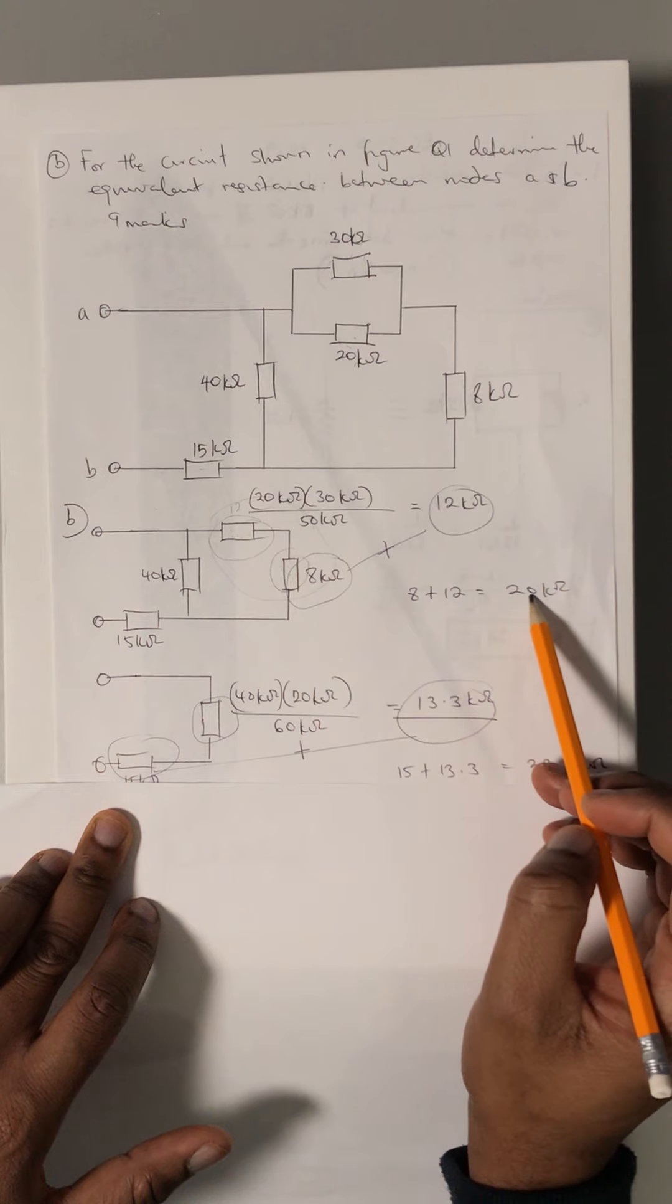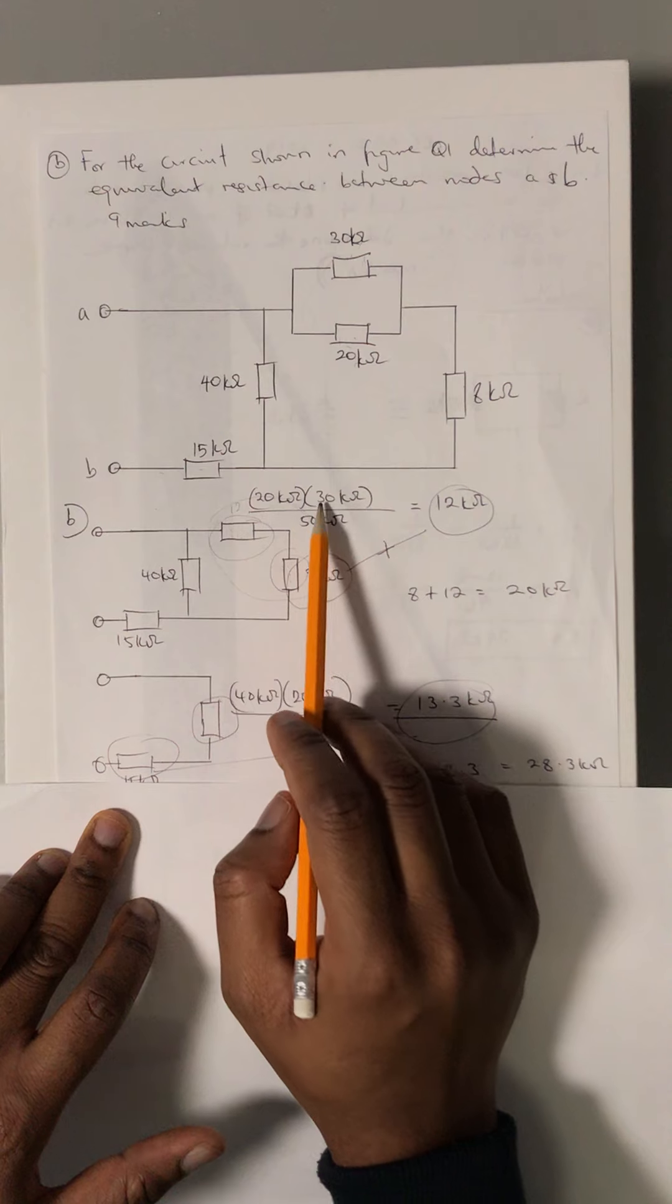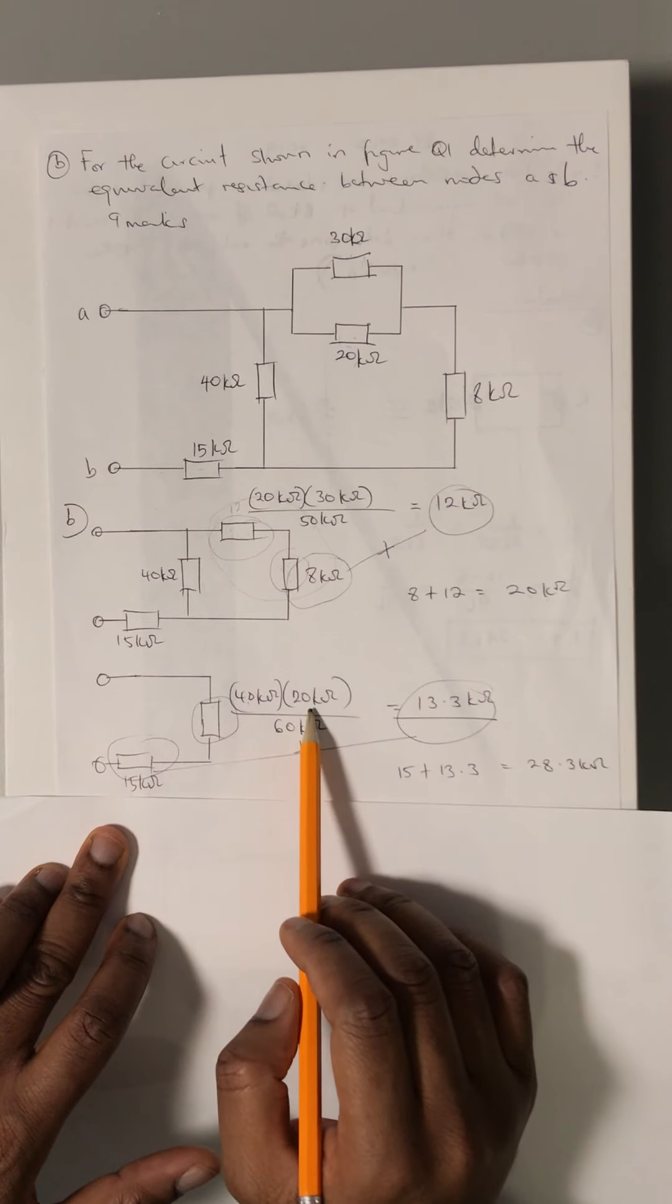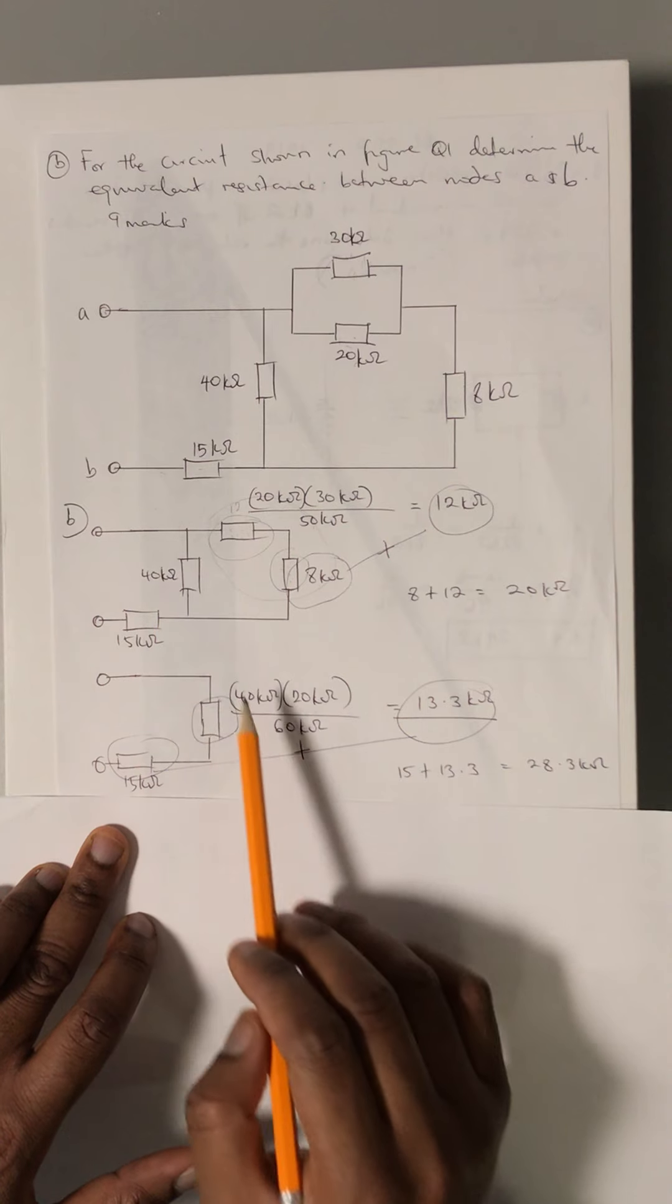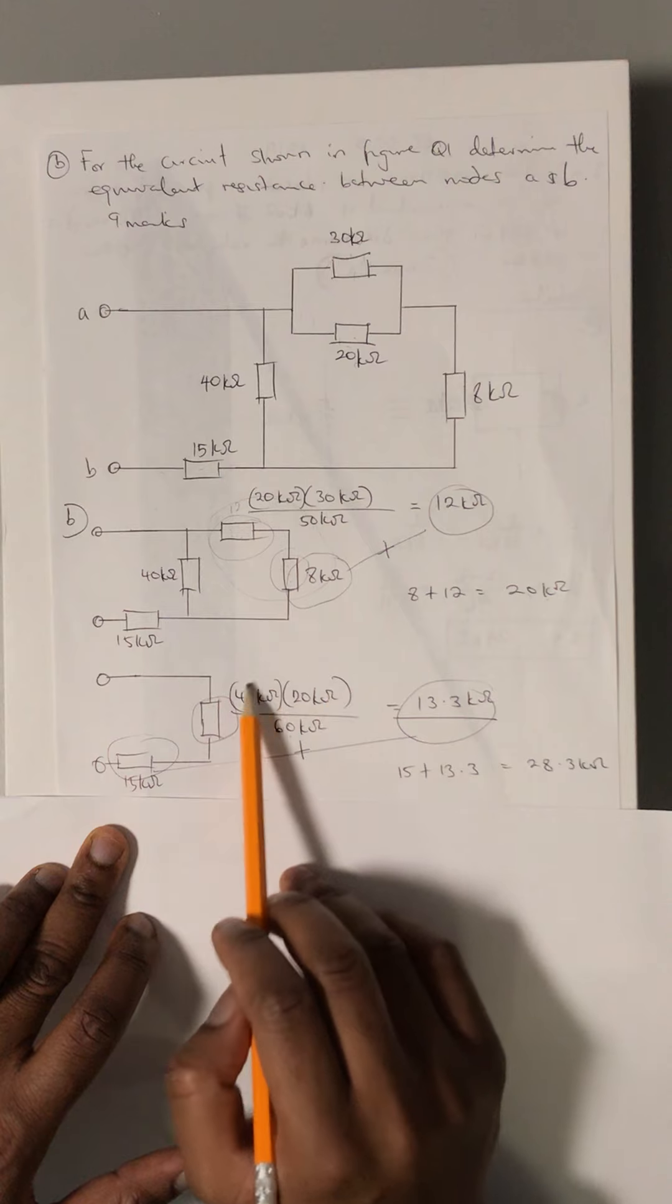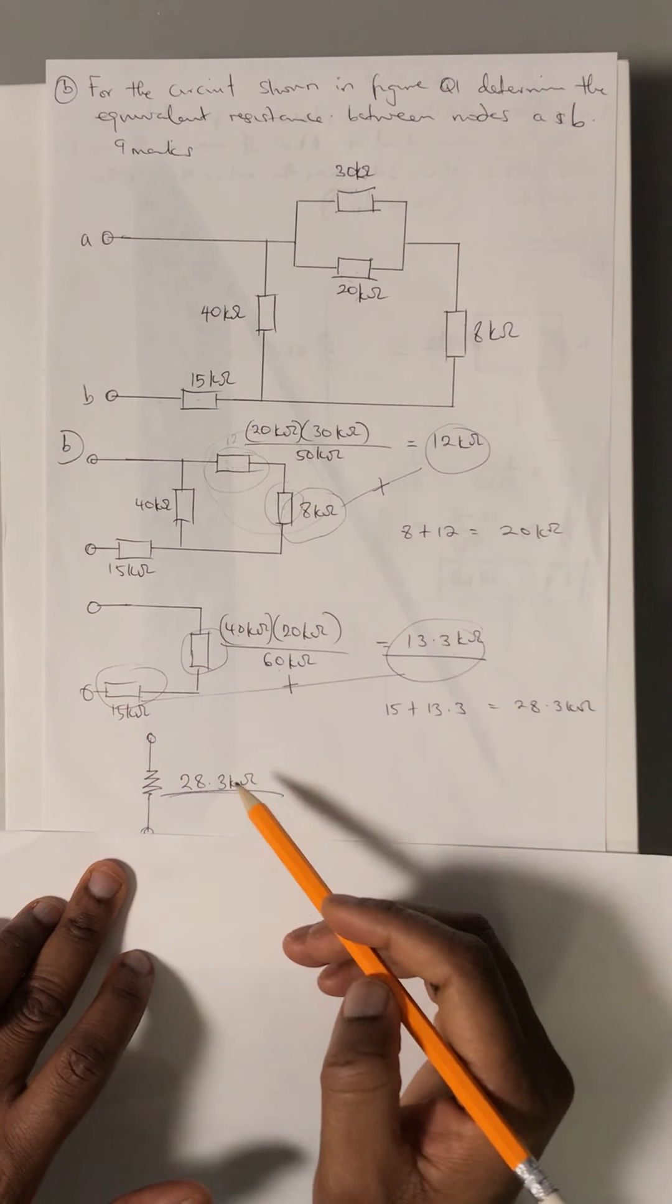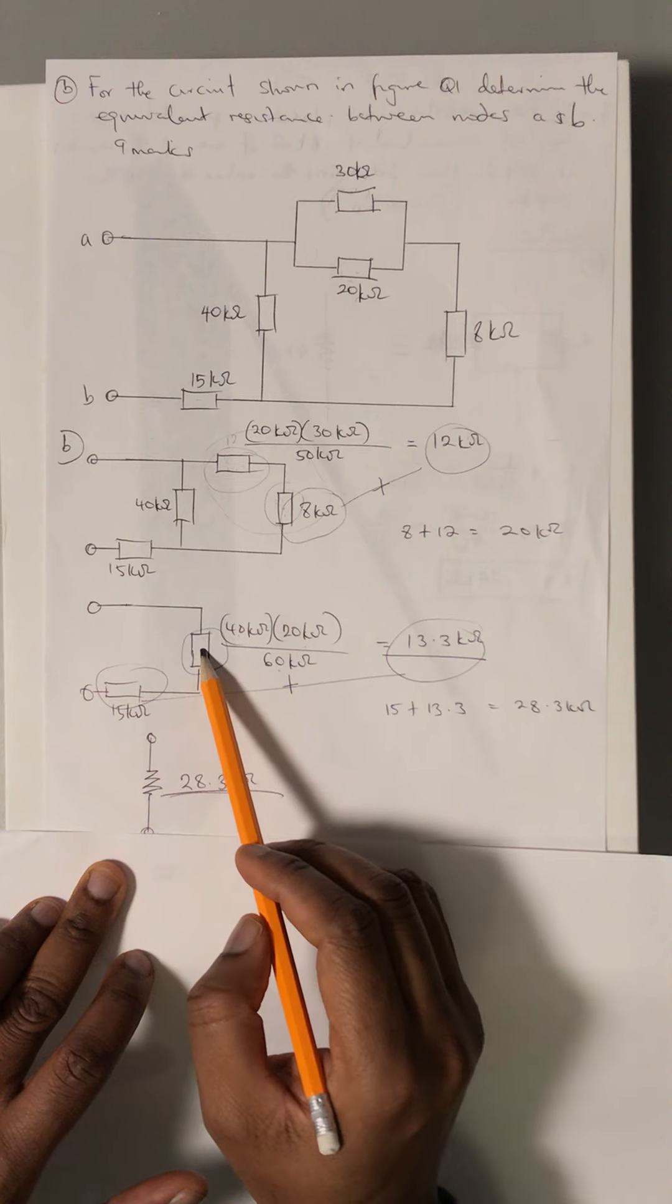We apply the first method of parallel equivalency. It becomes 40 kilo-ohms multiplied by 20 kilo-ohms, all over the addition which is 40 plus 20 equals 60. Our equivalent resistor becomes 13.3 kilo-ohms.